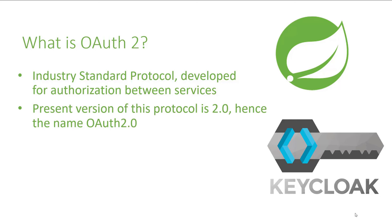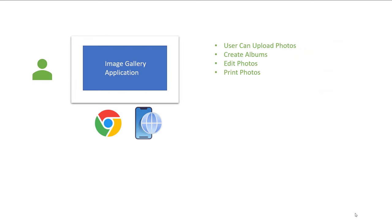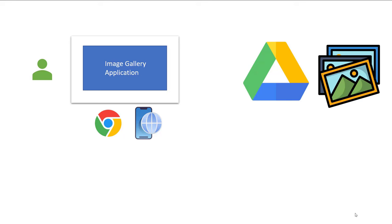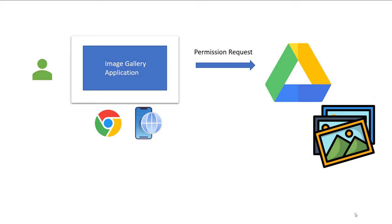Let's understand this better with an example. I am a user of a website or mobile application which is an image gallery application. The user uploads a photo and can apply different filters and frames around the photo, and you can also print these photos. Now everyone is using cloud services to store images like Google Photos, iCloud or Google Drive. If you want to access the photos stored inside your Google account from this image gallery application, you have to provide permissions for this application to access your Google or Facebook account. You can't just hand over the username and password because that is very risky — the application can store your credentials and if a hacker gets access to this database, you're in trouble. So we need a safe way to authorize the image gallery application, and the OAuth framework was developed for this reason.